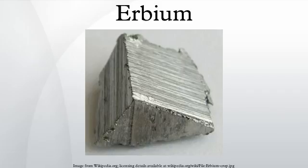This element also has 13 meta states, with the most stable being ¹⁶⁷ᵐEr with a half-life of 2.269 seconds. The isotopes of erbium range in atomic weight from 142.9663 u to 176.9541 u. The primary decay mode before the most abundant stable isotope, ¹⁶⁶Er, is electron capture, and the primary mode after is beta decay. The primary decay products before ¹⁶⁶Er are element 67 isotopes, and the primary products after are element 69 isotopes.